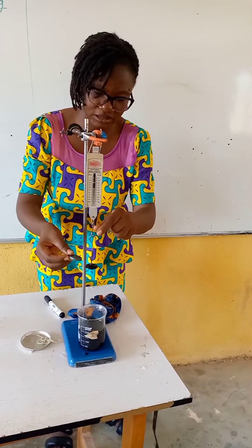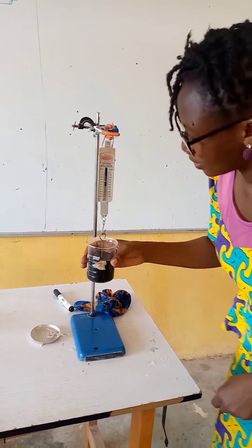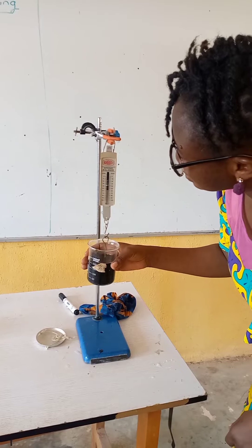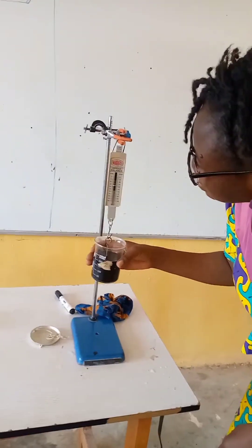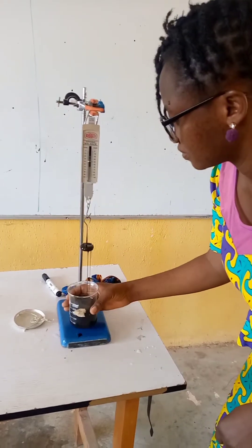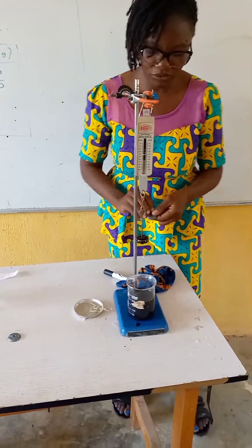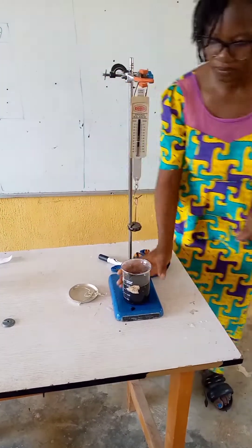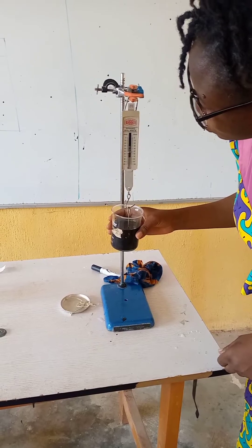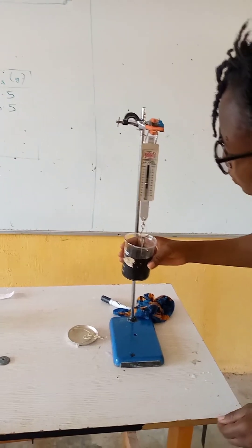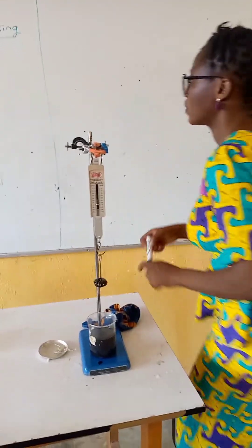Let's increase the masses and repeat. For the next mass, the reading settles at 36.5 grams. Adding the following mass gives 54.0 grams.